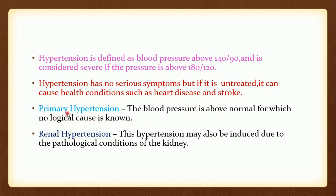There are two types of hypertension. One is primary hypertension and the second one is renal hypertension. Primary hypertension is when blood pressure is above normal for which no logical cause is known. If hypertension is induced due to pathological conditions of the kidney, then we will call it as renal hypertension.